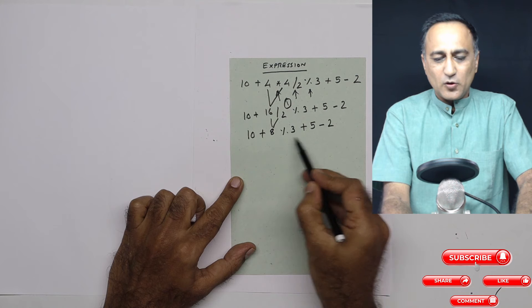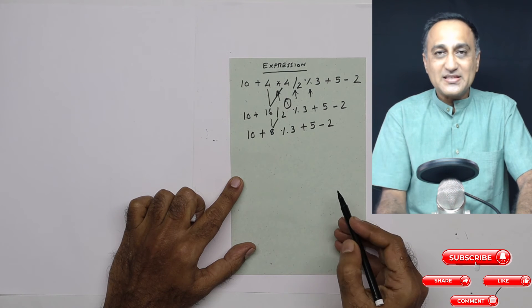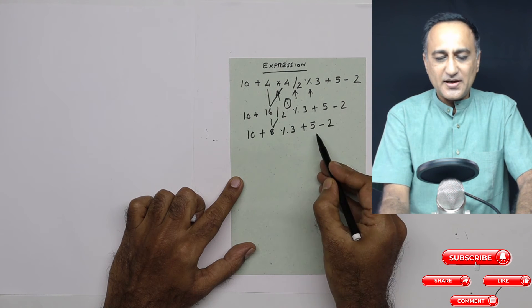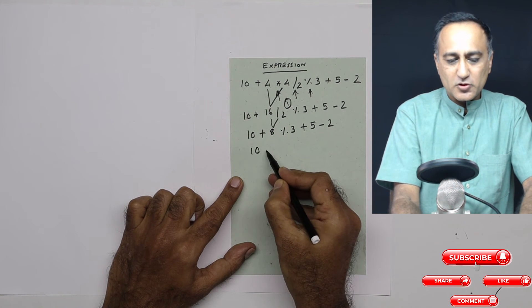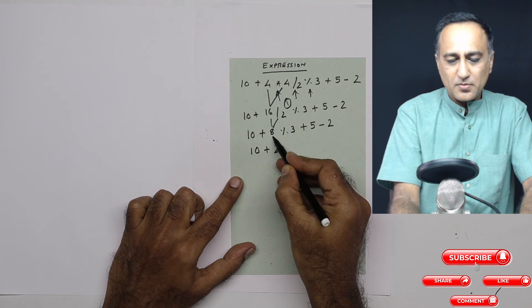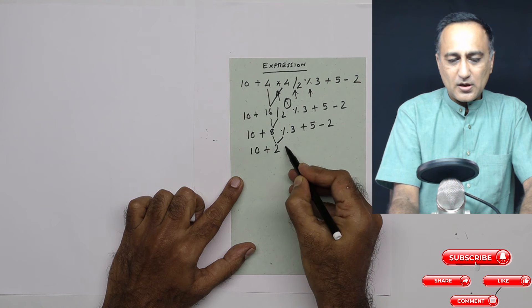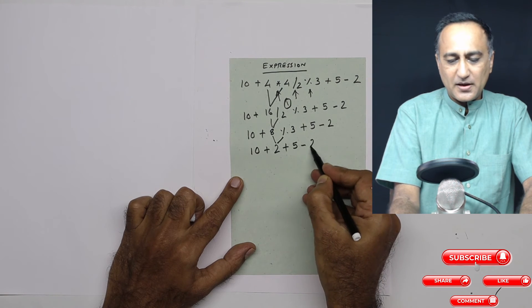The next step is again to look at the operators. Mod has the highest precedence compared to addition and subtraction. So 8 mod 3, the remainder is going to be 2. So it's going to be 10 plus 2 plus 5 minus 2.